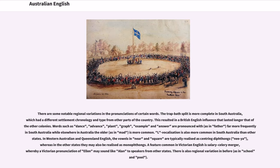L-vocalization is also more common in South Australia than other states. In Western Australian and Queensland English, the vowels in near and square are typically realized as centering diphthongs, whereas in the other states they may also be realized as monophthongs.